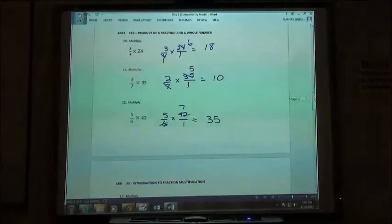And hopefully you came up with 35, because 6 went into 42 seven times, and then we have 5 times 7, 35, right?